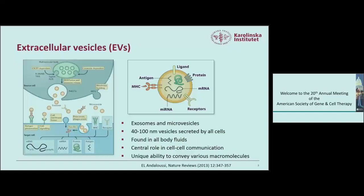So what are EVs? They are a combined name for all vesicles secreted to the extracellular space, roughly between 40 and 150 nanometers in size. They carry various macromolecules such as protein receptors, RNAs, microRNAs, mRNAs, other non-coding RNAs, luminal proteins, ligands, and MHC-class molecules for antigen presentation.